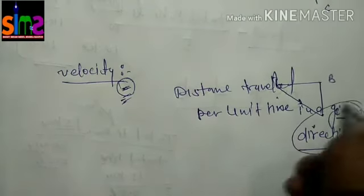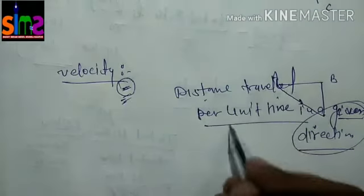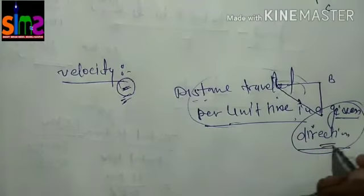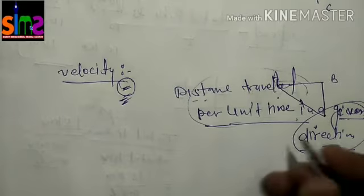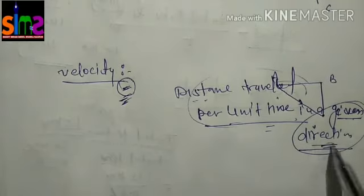So if we don't add direction, the distance travelled per unit time is called speed. And distance travelled per unit time in a given direction is called velocity.